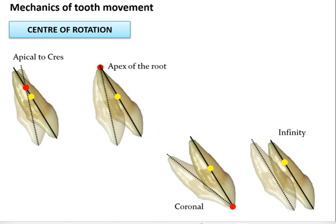The position of the center of rotation varies depending on where force is applied. If force is applied at the crown, the center of rotation equals the center of resistance. If force is applied at the middle one-third of the tooth, the center of rotation is at the apex. If force is at the apex, the center of rotation is at the incisal edge. If force is in line with the center of resistance, the center of rotation is at an infinite distance.